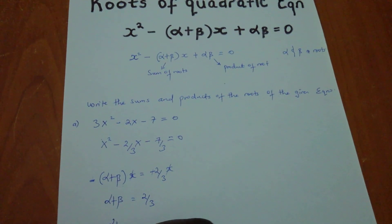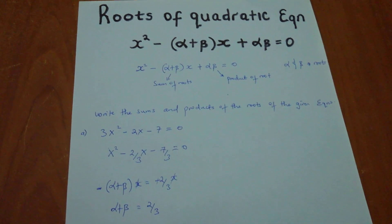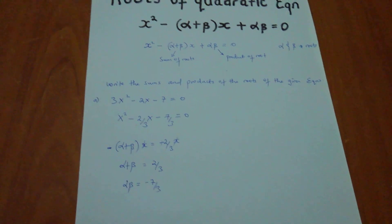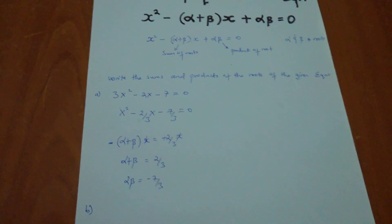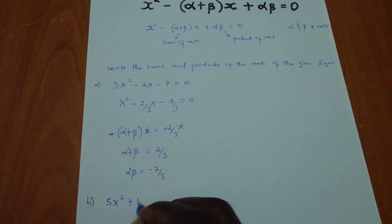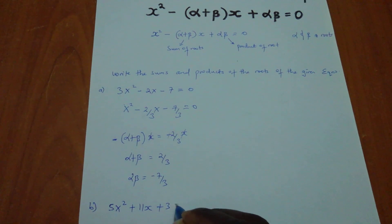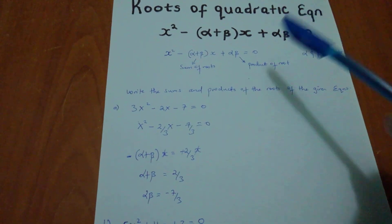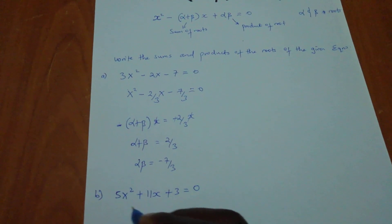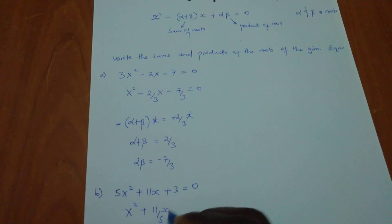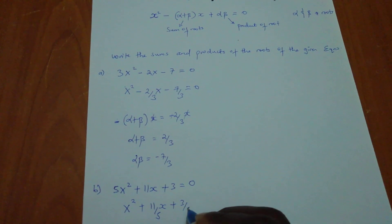And the product is just automatic. The alpha beta is just negative 7 over 3. And what if we have a part B and we have this equation? We have 5x squared plus 11x plus 3 is equal to 0. The first thing, we have to make this expression look as the original expression, which means if I divide by 5, I'll remain with x squared plus 11 over 5x plus 3 over 5 is equal to 0.